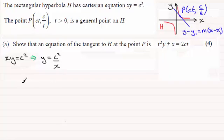If we just take this version though we can find dy by dx very easily. dy dx would be equal to, well this is c squared times x to the power minus 1. So if we differentiate that it's going to be minus c squared times x to the power minus 2 or just simply minus c squared over x squared.